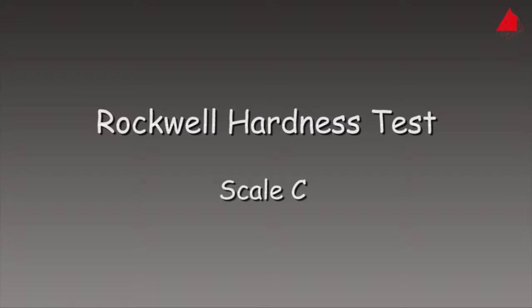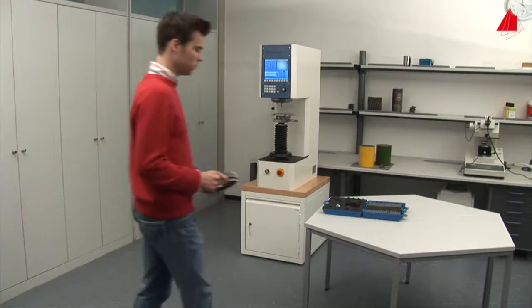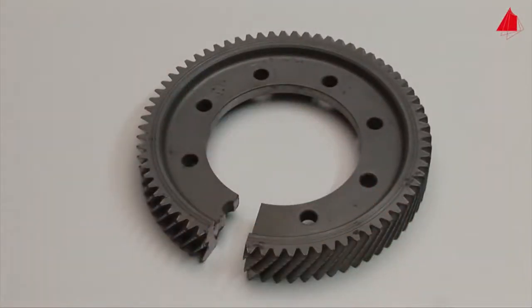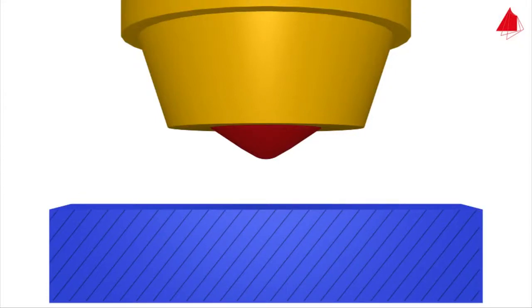The Rockwell hardness test scale C. In this video we will show how the Rockwell hardness test works using a gear wheel. The basic idea of this test method is to measure the permanent depth of indentation of a hard indenter under a test force.